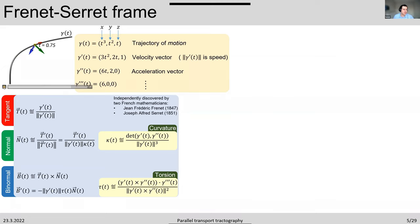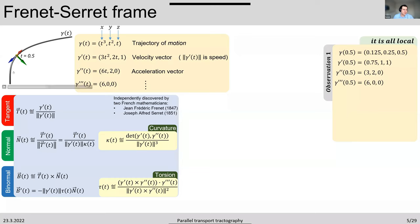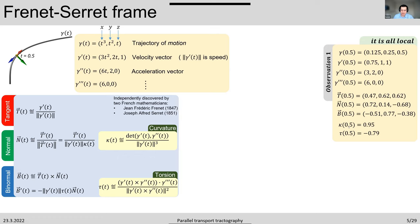One important point of the Frenet-Serret frame is that everything is local. While we see smooth motion, it is completely dependent on the local parameterization. At any parameter value, say T=0.5, we can calculate the point in space, all its derivatives, the tangent, normal, binormal, curvature, and torsion. The Frenet-Serret frame is unique — once you have a curve parameterization, the frame is unique.